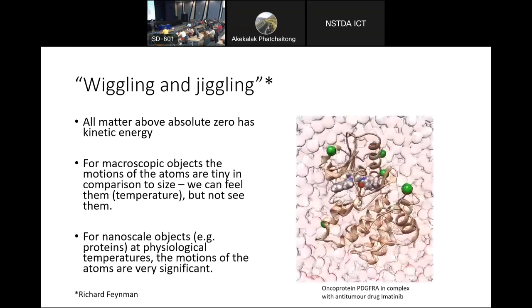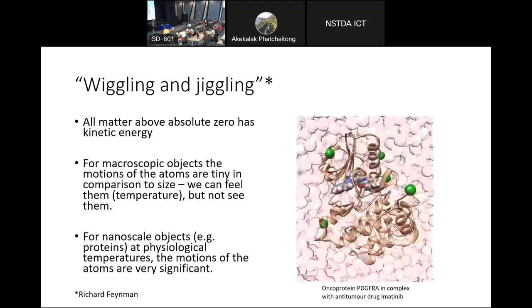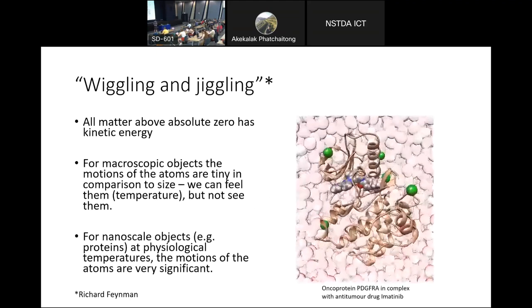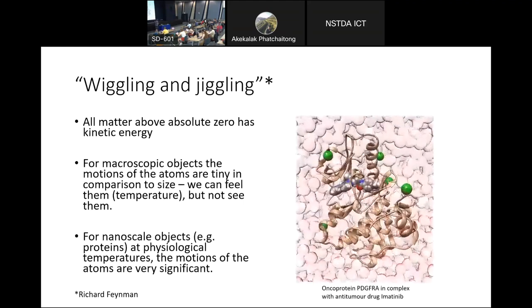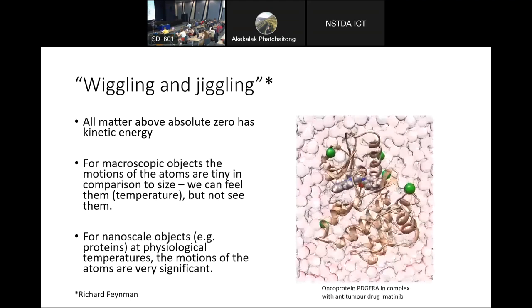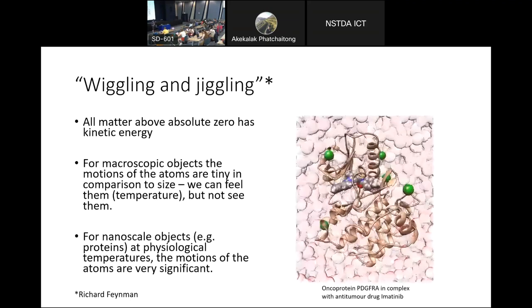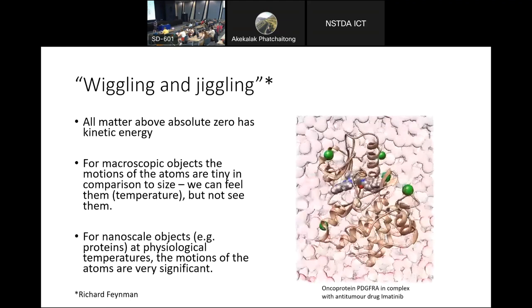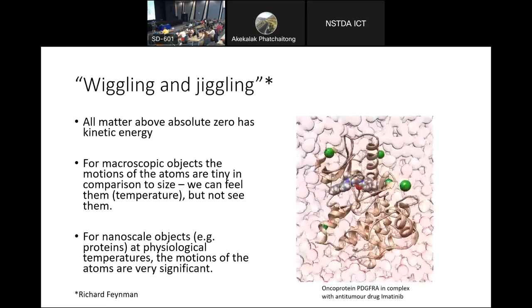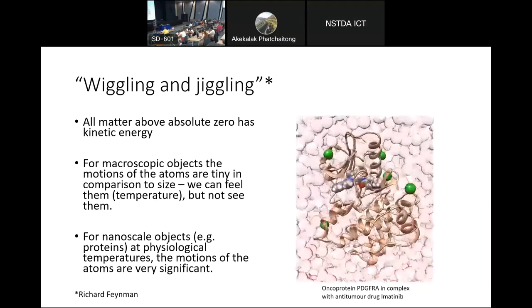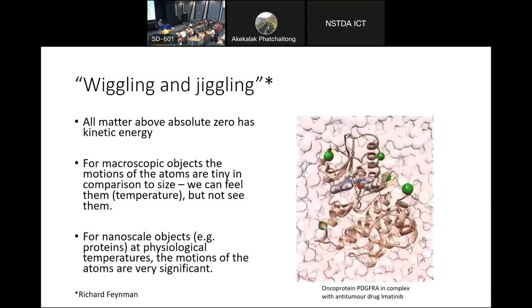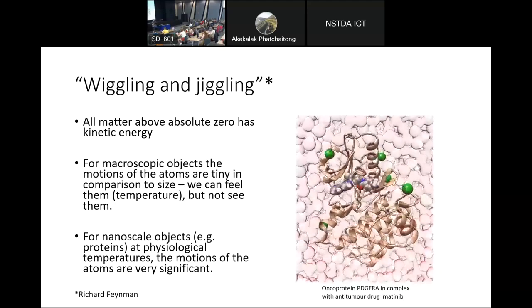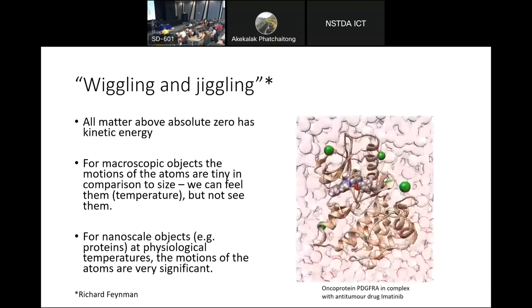Because of this wriggling and jiggling, apparently originally coined by Richard Feynman many years ago. That picture on the right is from a biomolecular simulation. It's a small kinase domain of a cancer target complexed with an antitumor drug. As you can see, everything is jiggling around. That is thermal motion, just due to the fact that this system exists at room or body temperature.